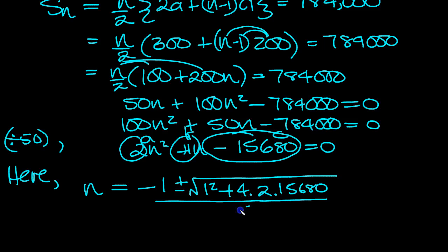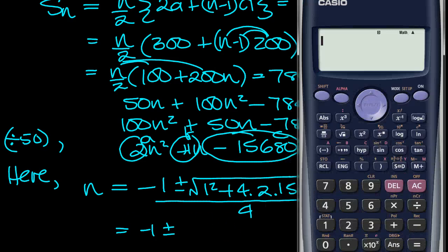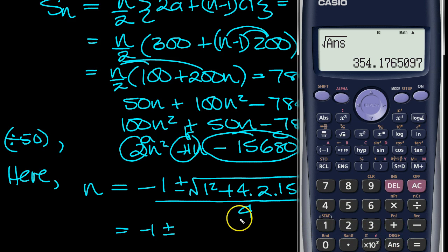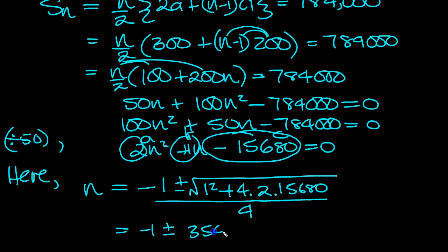So we get then, minus 1, plus or minus. Now what does this square root work out to? 8 times 15680, plus 1, 1 squared is still 1. And then square root the answer. 354.1765 over 4.